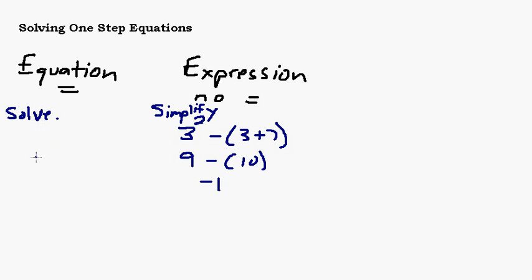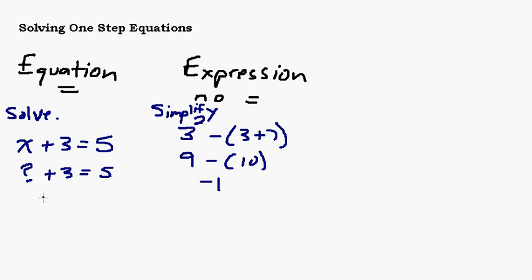An example of an equation — something with an equal sign — would be x plus 3 equals 5. This is a pretty simple equation, and what we need to do is find the value of x that will make this equation true. We could think of it as: what plus 3 equals 5? We all know that's 2, so x equals 2. That's the solution because it makes the equation true.